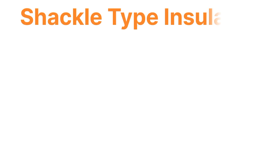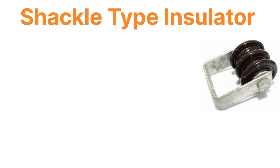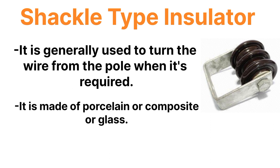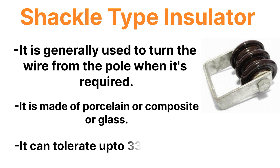The next type is the shackle type insulator, which is used to support and also insulate the conductors from the supporting structure. It is generally used to turn the overhead lines when required. It is made up of porcelain, composite, or glass, and can tolerate a voltage level up to 33 kV. Here you can see in the image what it looks like.